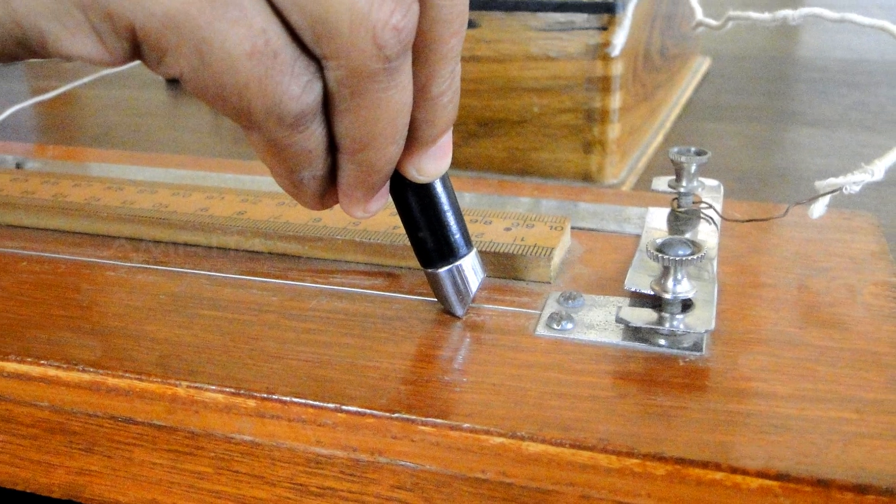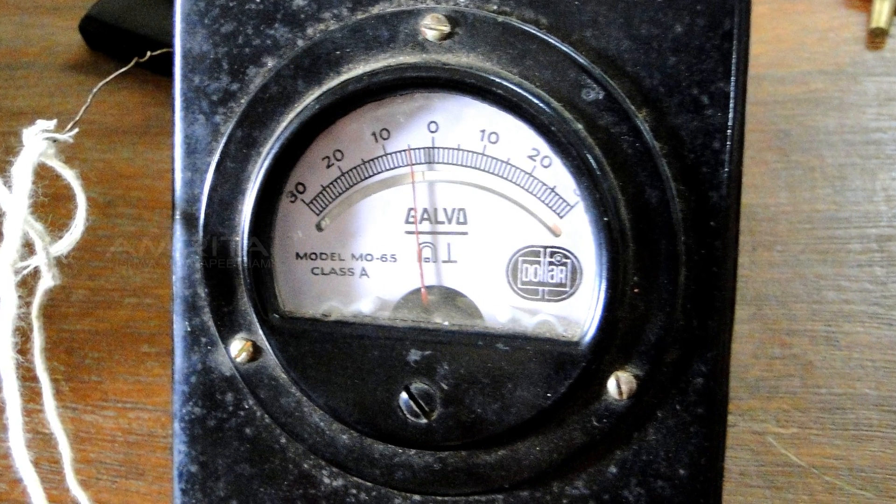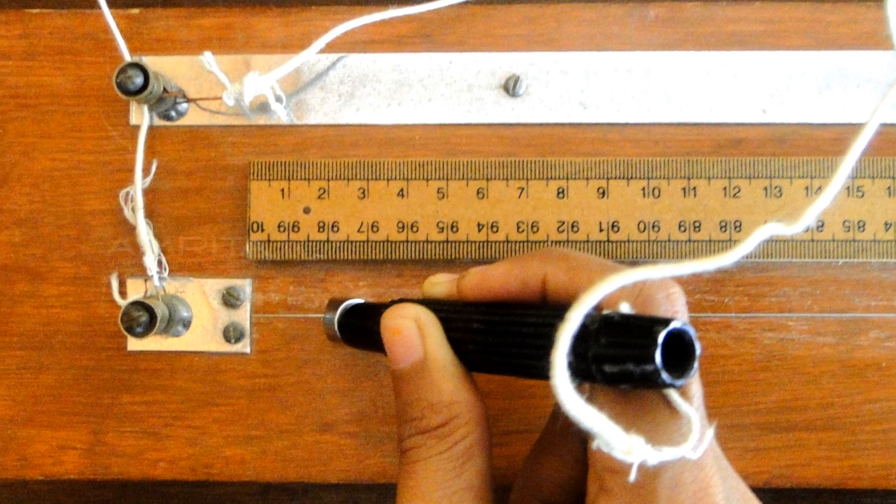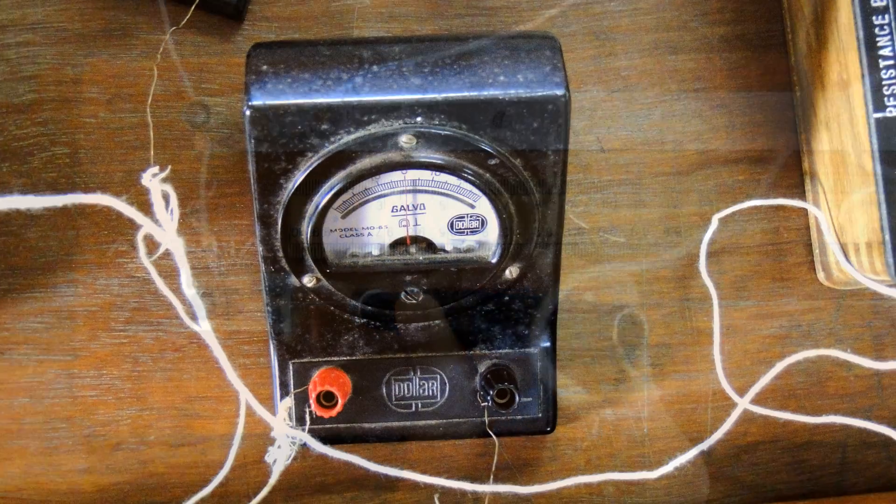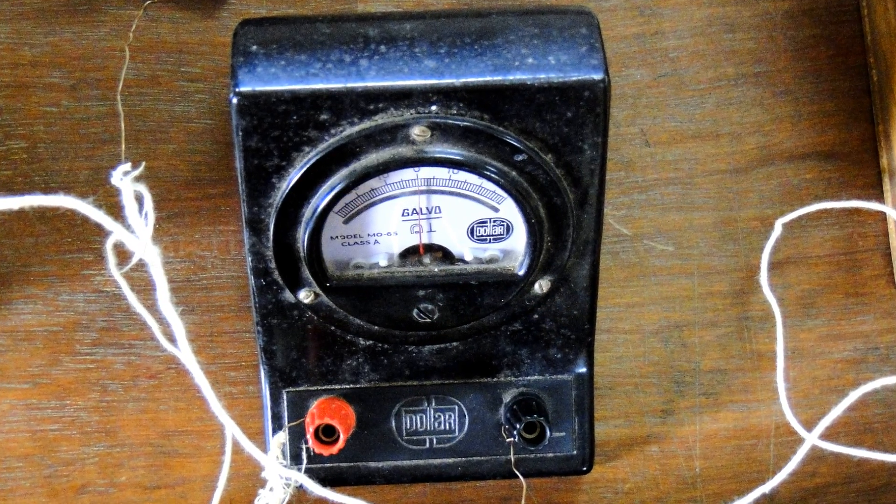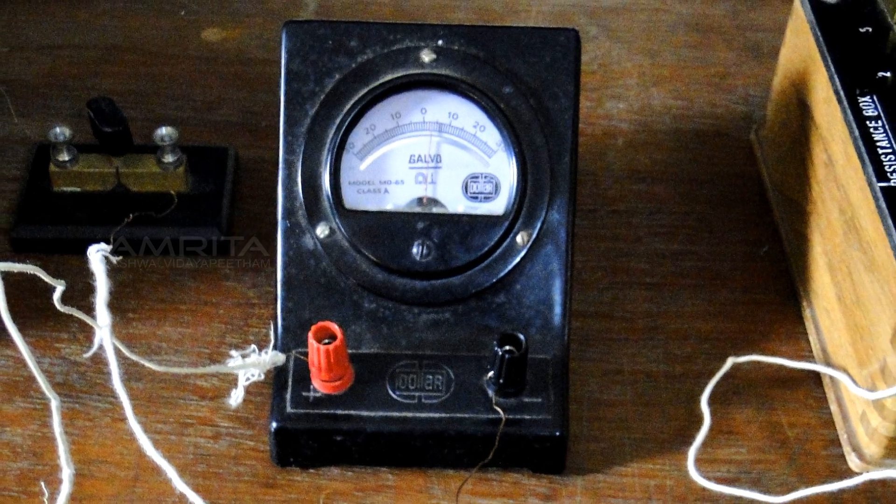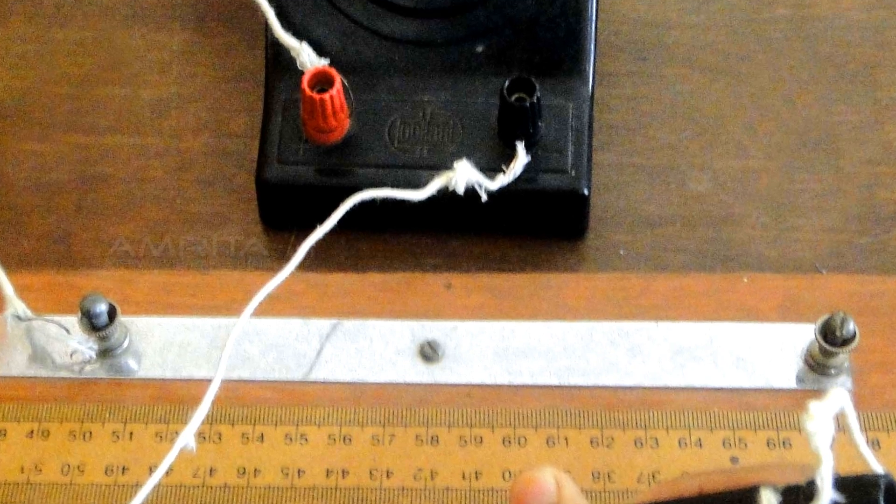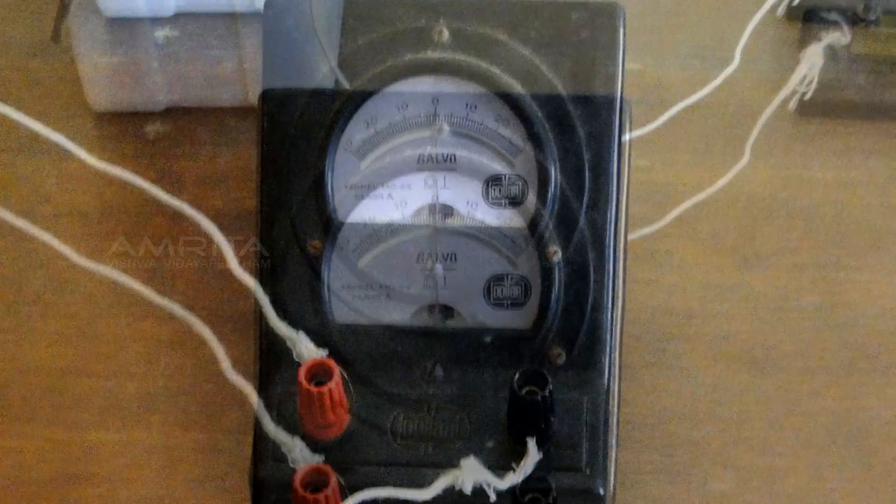Press down the jockey so that the knife edge makes contact with the wire and observe the galvanometer deflection. Move the jockey to different positions along the bridge wire from left to right. Notice the reading in the galvanometer. The needle of the galvanometer will start deflecting to the right side, and when the jockey reaches a particular point of the bridge wire, the galvanometer shows a zero reading. This is the balancing point.